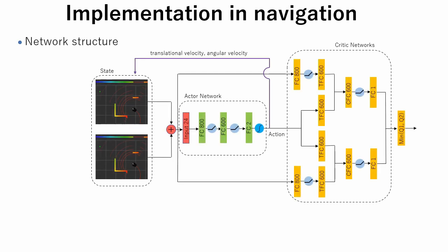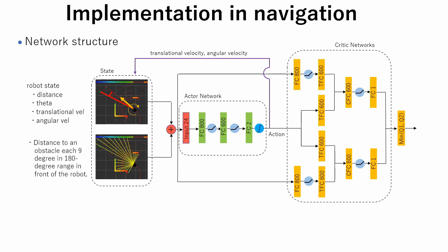Here is a structure of a network we used in this simulation. Robot states consist of distance between robot and goal, angle theta between robot heading direction and goal direction, translational velocity and angular velocity of the robot. It also contains distances to obstacles, each 9 degrees and 180 degree range in front of the robot.